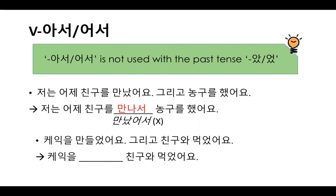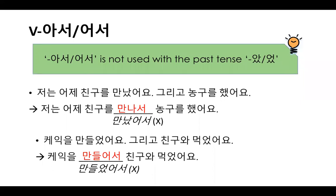Another example: 케이크를 만들었어요 — I made a cake — and 친구와 먹었어요 — I ate it with my friend. 만들었어요 comes from 만들다, stem 만들, vowel 으, so attach 어서: 케이크를 만들어서 친구와 먹었어요. Not 만들었어서, but 만들어서. The ending 먹었어요 shows the whole sentence is past tense.